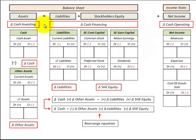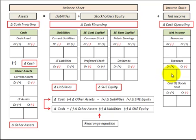For the cash flow statement, the change in cash for investing activities relates to assets in the balance sheet. The change in cash for financing activities relates to changes in liabilities and stockholders' equity in the balance sheet. The change in cash for operating activities relates to net income from the income statement.